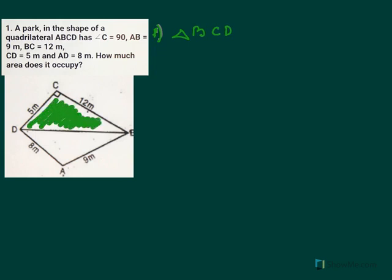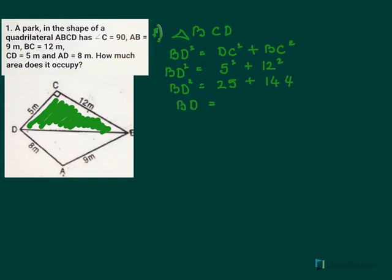And here we are going to use the Pythagorean theorem. So who is the hypotenuse here? The hypotenuse is BD. So BD square equals DC square plus BC square. We have BD square equals 5 square plus 12 square. And your BD square will be 25 plus 144. And you are getting your BD as 13. So let's mark that BD as 13.